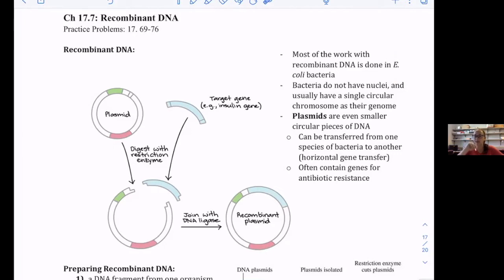They like using E. coli because they just have that circular chromosome. Plasmids are even smaller circular pieces of DNA. This is a plasmid or cartoon version of a plasmid. It's just DNA that goes around in a circle, and it will have something like a start.